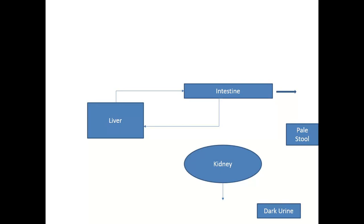In hepatic jaundice, dark urine may also be present. This is because around 20 percent of urobilinogen is normally reabsorbed and recirculated to the liver, but when the liver is affected, it cannot be taken up and instead passes directly to the kidney, enters glomerular filtration, and gets oxidized to urobilin, giving dark color to the urine.